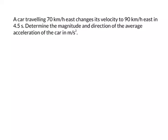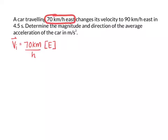We're going to start this problem by listing everything that we know. We'll start with our initial velocity, which is 70 kilometers per hour in the east direction — so Vi equals 70 kilometers per hour east. We're also told our final velocity: VF equals 90 kilometers per hour east.